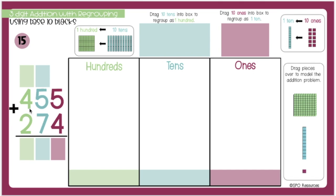First, I will represent 455 by dragging over 4 hundreds, 5 tens, and 5 ones.